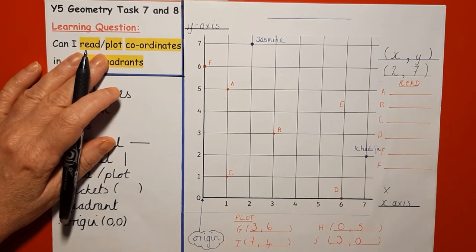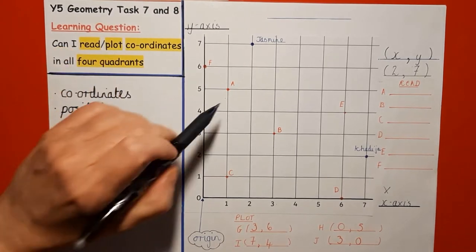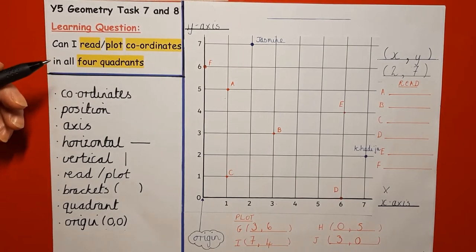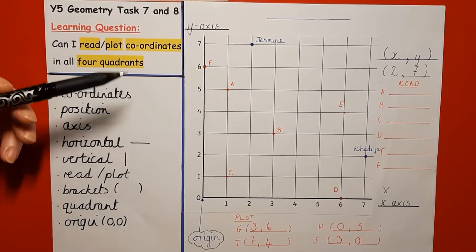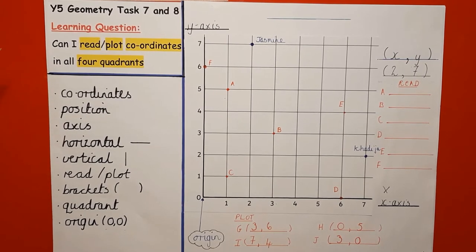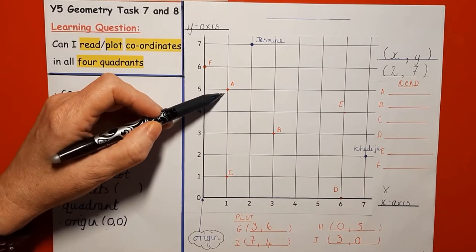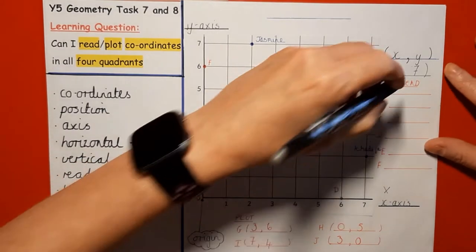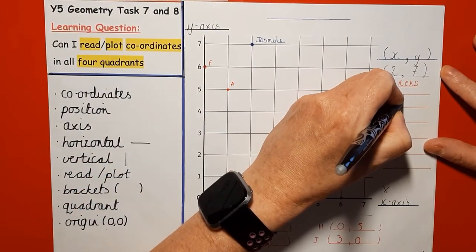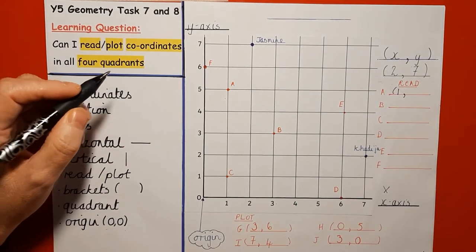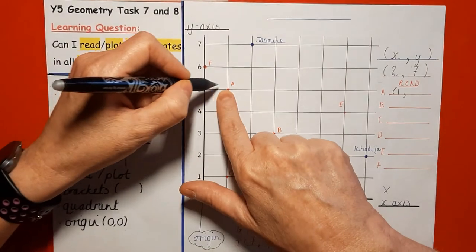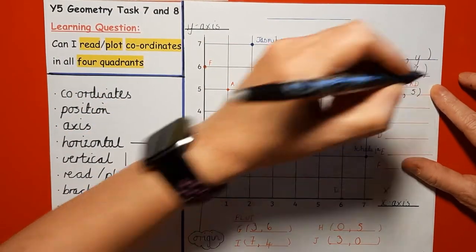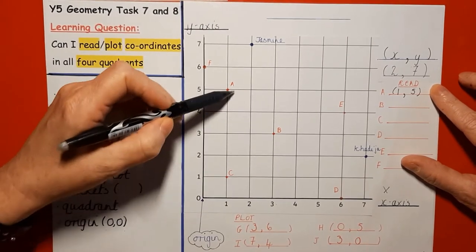I've plotted some letters A to F, and now I'm going to read and record the positions of these coordinates. You can pause the video and have a go first. Position A: remembering to give the X axis number first, we can see one across, so we put one in the brackets, then the comma, and then five for the Y axis. So the coordinate for A is (1, 5).